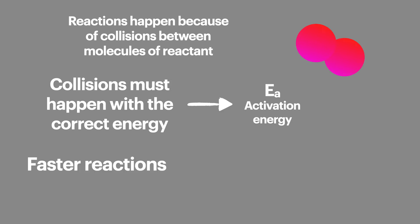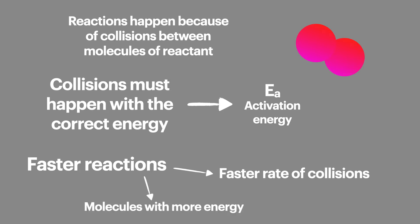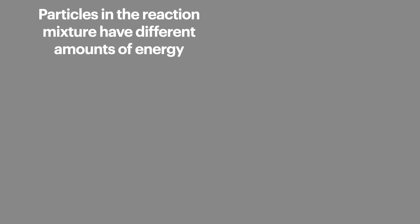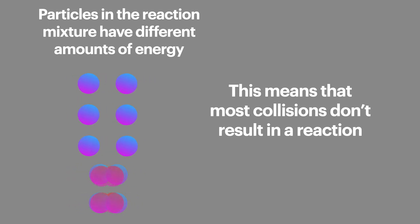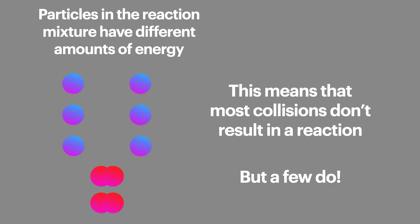If you want to increase the rate of reaction you have to increase the rate of collisions or the amount of energy the particles have when they collide. Particles of the reactants all have different amounts of energy — some have less than activation energy and some have more. This means that most collisions don't result in a reaction, but the ones involving particles that have more than activation energy do result in a chemical reaction.